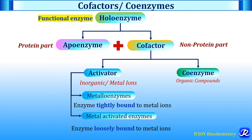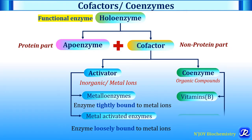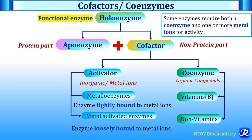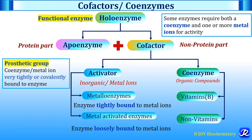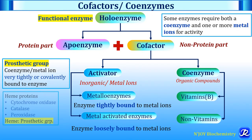Coenzyme is an organic, non-protein compound which combines with apoenzyme to form the functional enzyme, that is holoenzyme. Coenzyme is derived from vitamin B complex, though some coenzymes are derived from non-vitamins also. Some enzymes require both a coenzyme and one or more metal ions for activity. When a coenzyme or metal ion is very tightly or covalently bound to the enzyme, it is called as a prosthetic group.